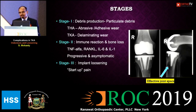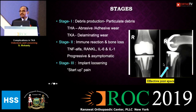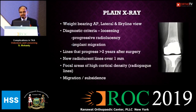Osteolysis is especially more common in the tibial component because around the stem and screws in the tibia, particles trickle down inferiorly and form osteolysis there. This increases the effective joint space and hence causes more loosening.